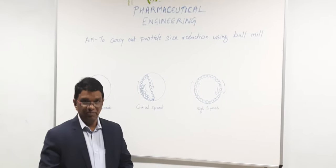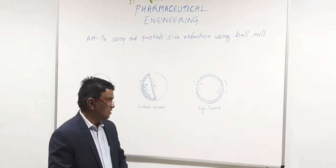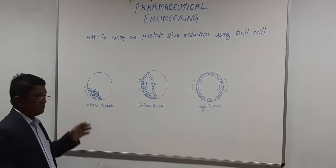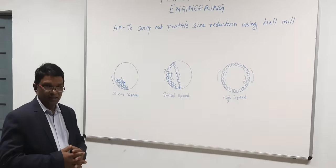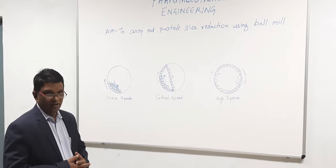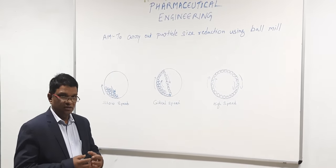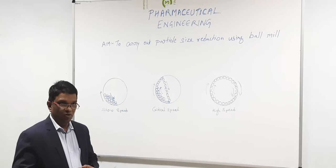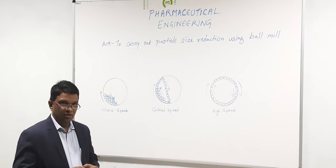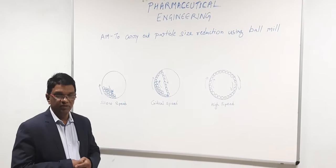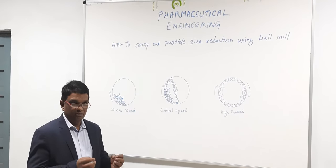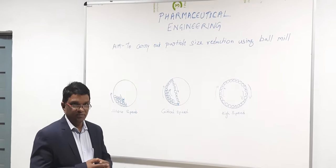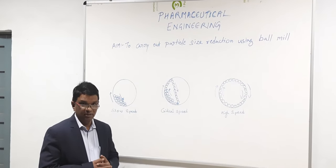The speed of the ball mill plays a very crucial role. In a ball mill, we use metallic or ceramic balls of round shape. These balls are used in different sizes, because if we take a single size or bigger size ball, there will be void space between them. That space will be a problem because the particle will get inside those void spaces and particle size reduction will not take place.